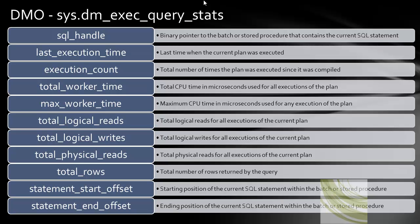Max worker time is the maximum CPU time in microseconds used for any single execution of the plan. Total logical reads, total logical writes, and total physical reads cover how many logical reads, writes, and physical reads have been done per query. You'll notice there is no total physical writes column. The reason is that when a query writes data, it writes into memory — you do see the logical writes — but writing to disk is taken care of by the checkpoint process.